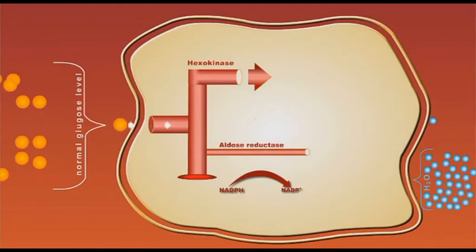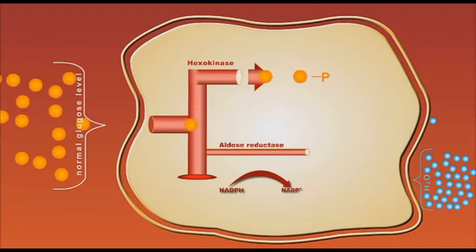Normally, when glucose enters the cell, it is phosphorylated and then metabolized through the hexose monophosphate and tricarboxylic acid cycle pathways, producing energy.